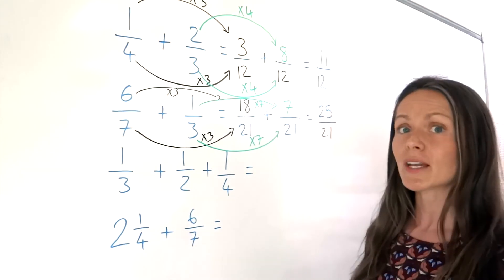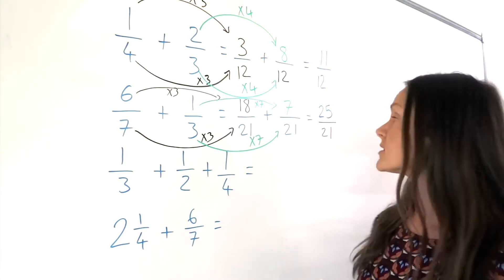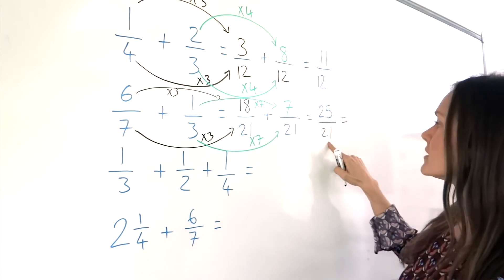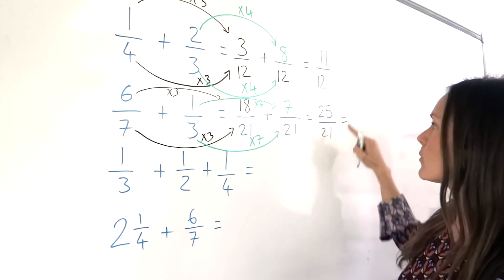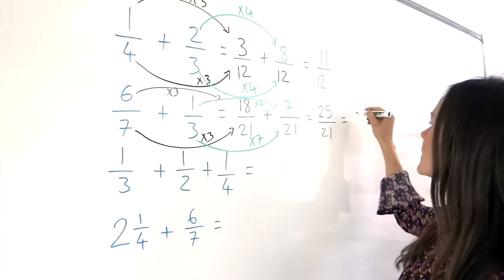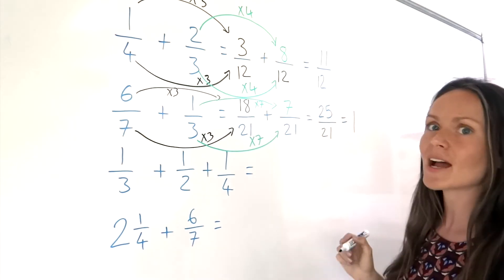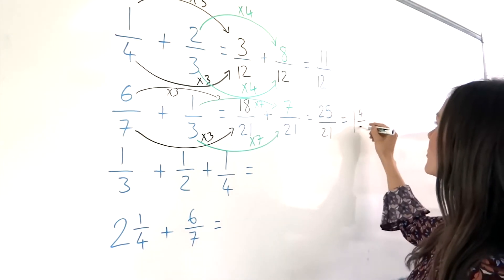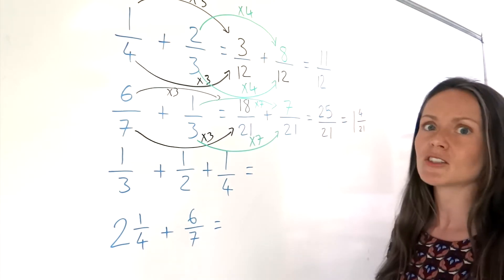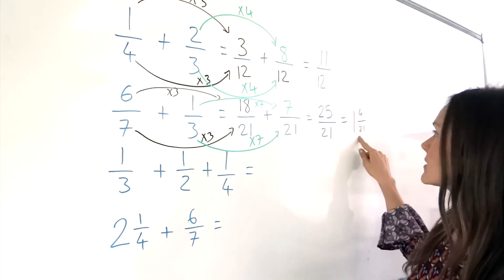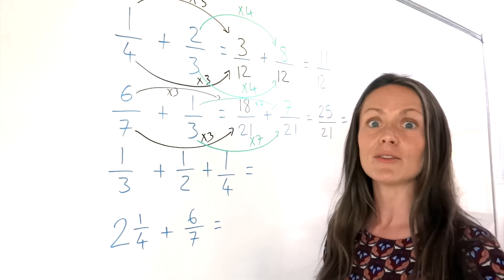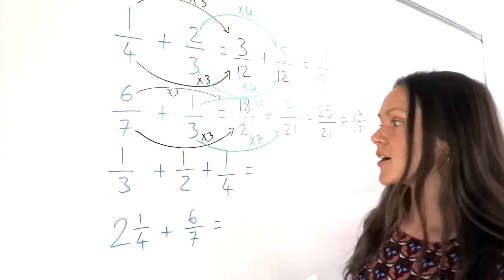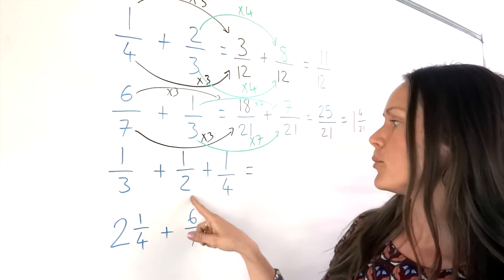I could, however, write it as a mixed number. If you want to have a go at writing it as a mixed number — how many times does 21 go into 25? It goes in exactly once, and we have a remainder of 4, so that goes on top. If you're not sure how to change improper fractions into mixed numbers, you can check out my other video which explains how to do that.